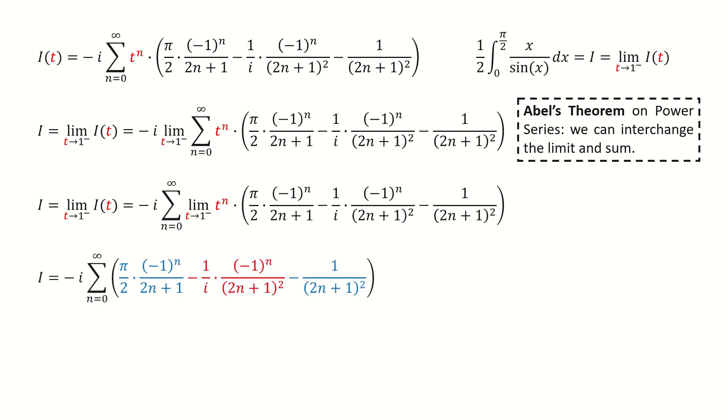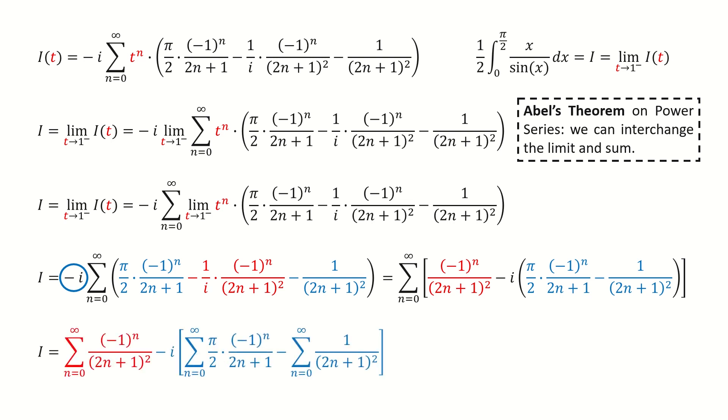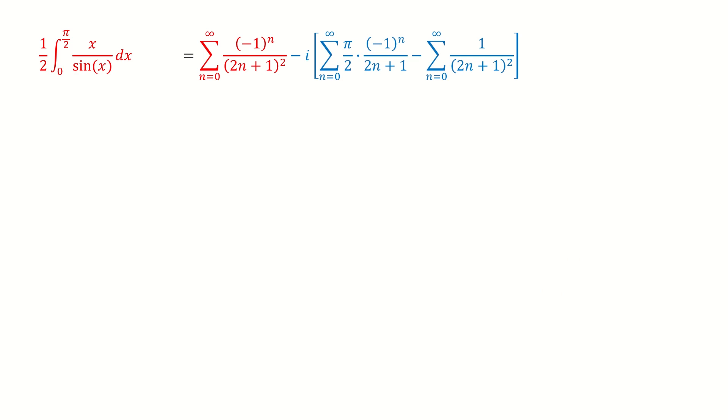So we got here. Then we put this negative i inside the sum, and we got here. Next, we split it into three parts. The red term is the real part, and two blue terms are the imaginary part. Recall this capital I is defined by this integral. I copy it here.